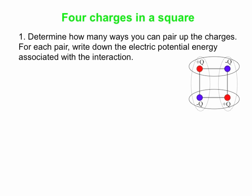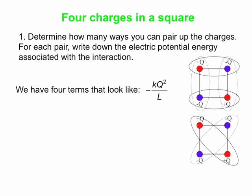In our case, four pairs consist of a positive Q interacting with a negative Q. If the square has side length L, the energy for each such pair is k(+Q)(−Q)/L = −kQ²/L. There are four of those terms. The remaining two pairs are the diagonals — positive with positive and negative with negative — giving two terms of +kQ²/(√2 · L), since the diagonal distance is √2L.